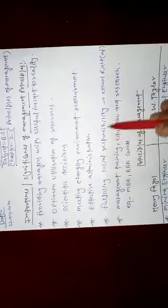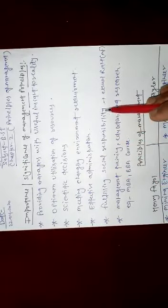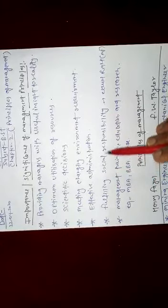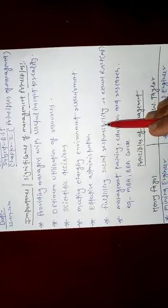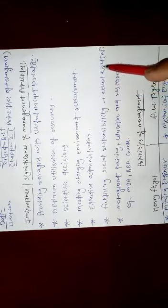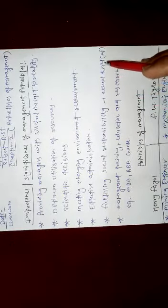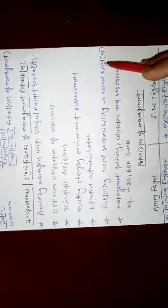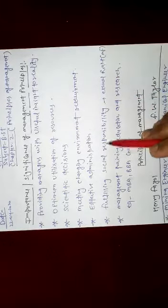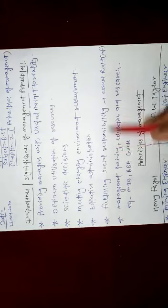Fulfilling social responsibility means society must be given different types of responsibilities equally. For example, equal rights — males and females working in an organization must have equal rights to receive equal pay, and their work must be divided equally.